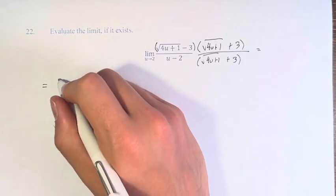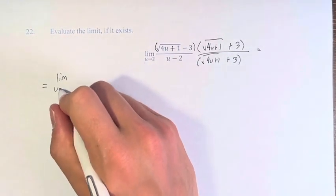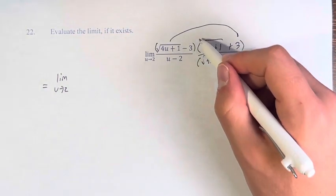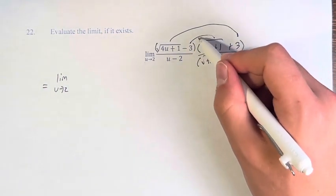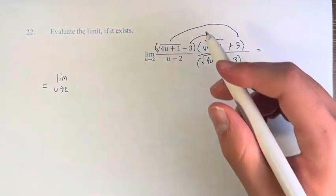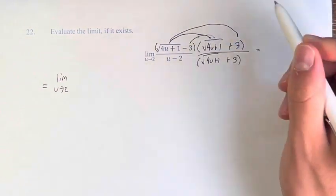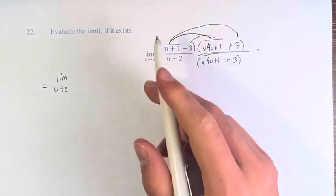And what this is going to give us, the reason why we're doing this, is because we have 3 times the square root of 4u plus 1 minus 3 times the square root of 4u plus 1. So those two terms cancel. We get the square root of 4u plus 1 times the square root of 4u plus 1. The square root of anything squared is just the thing inside, so 4u plus 1.